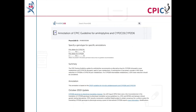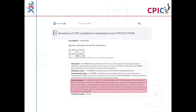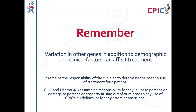This guideline has been annotated on the PharmGKB website, including a drop-down menu where an activity summary can be given for specific combinations of alleles. The activity summary includes implications for the patient's response to amitriptyline, the appropriate dosing recommendation for the specific genotype, and the strength of that recommendation. Remember that variation in other genes, in addition to demographic and clinical factors including concomitant medications, can affect treatment. It remains the responsibility of the clinician to determine the best course of treatment. CPIC and PharmGKB assume no responsibility for any injury to persons or damage to property arising out of any use of CPIC's guideline, or for any errors or omissions.